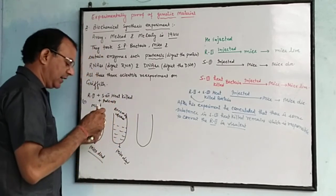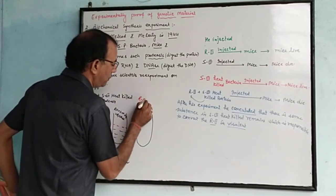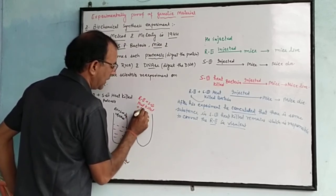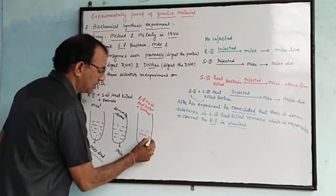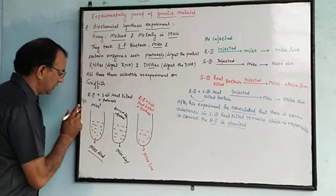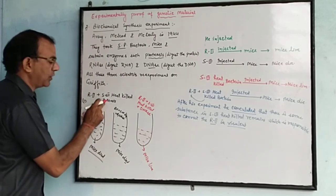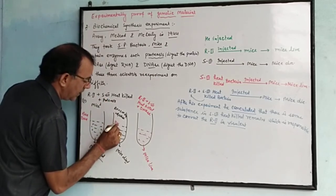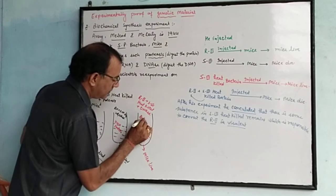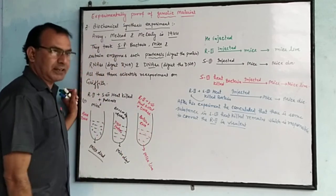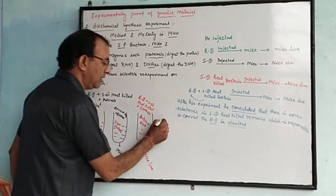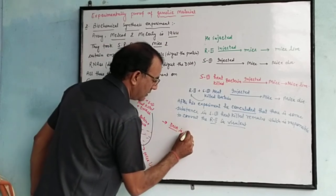In the third condition, they took R2 with S3 heat-killed bacteria, added DNAse enzyme, and injected into the mice. In this condition, they saw that the mice lived. Because DNAse digests DNA — so when DNA was digested and removed, the transformation did not occur. This confirmed that only DNA is the genetic material.